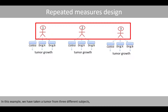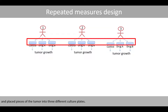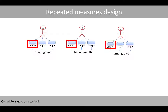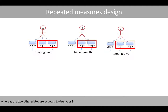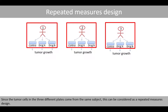Here is another example of a repeated measures design. We have taken a tumor from three different subjects and placed pieces of the tumor into three different culture plates. One plate is used as a control, whereas the two other plates are exposed to drug A or B. Since the tumor cells in the three different plates come from the same subject, this can be considered as a repeated measures design.